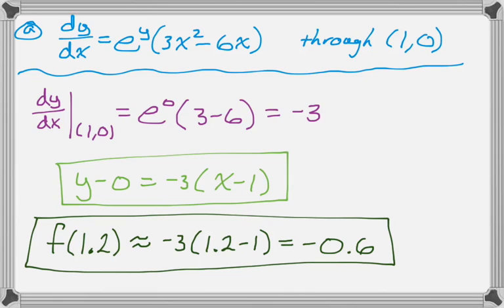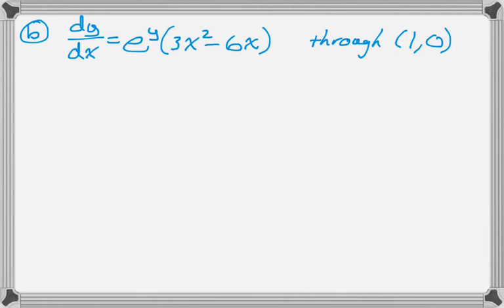So 0.2 times negative 3. All right, that's part A. So now let's take a look at part B, which is to find the particular solution that actually passes through (1, 0).